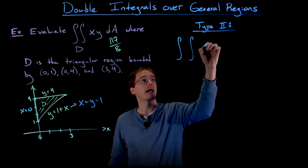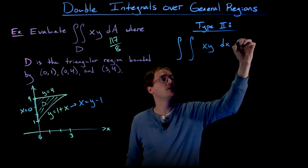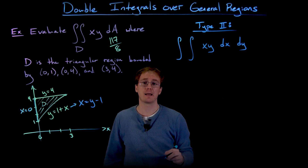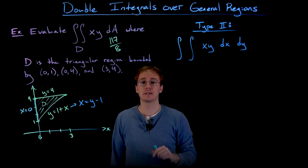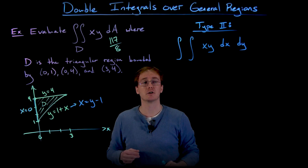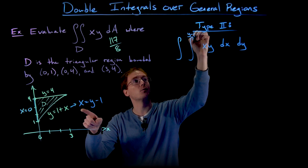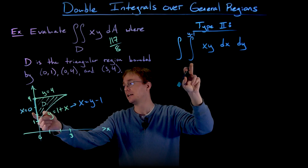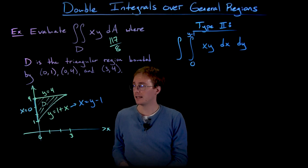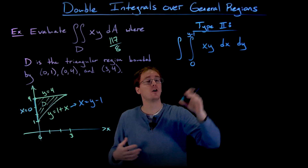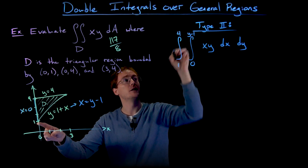We're still integrating the function x times y. For a type 2 region, we first integrate with respect to x, then finish by integrating with respect to y. The inner integral's limits come from our left and right bounding curves: lower limit x equals 0, upper limit x equals y minus 1. The outer integral runs over the interval of y values from 1 to 4.